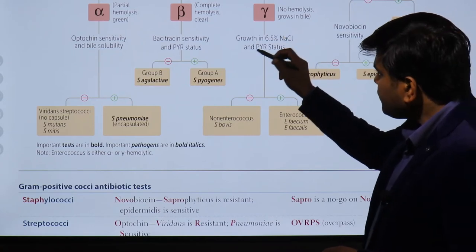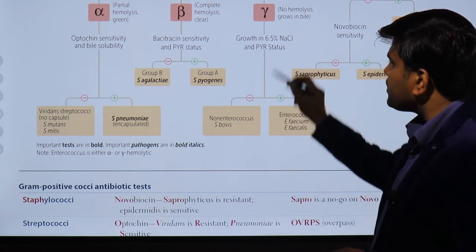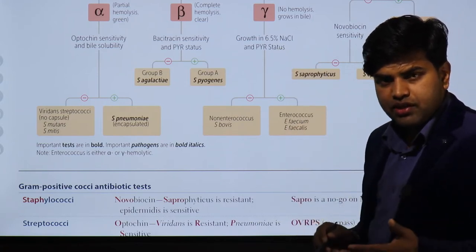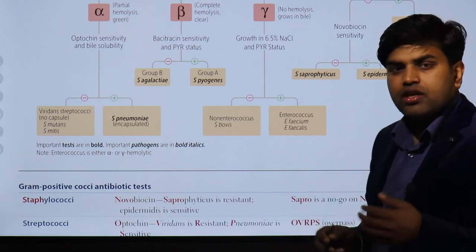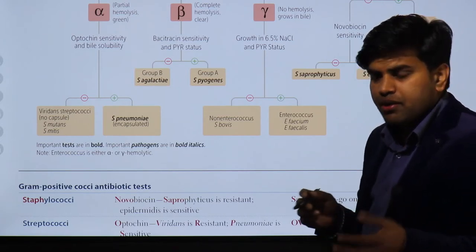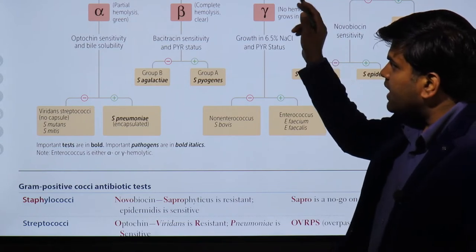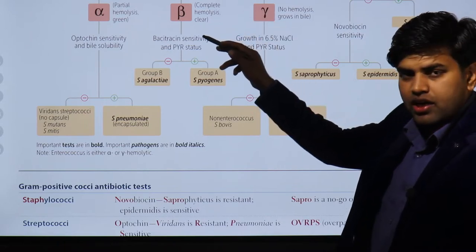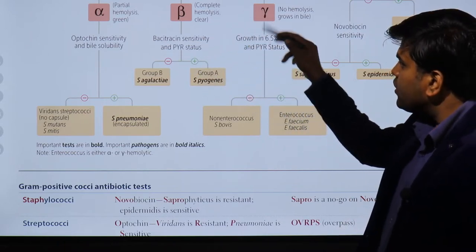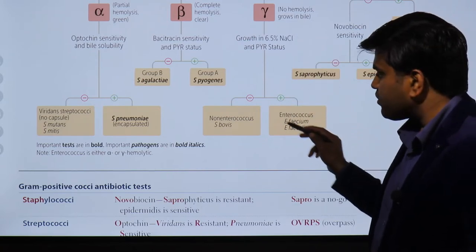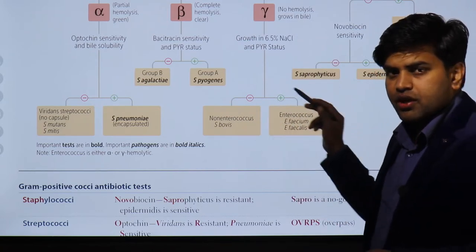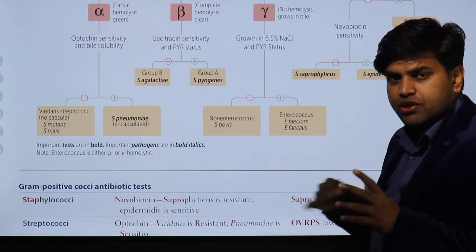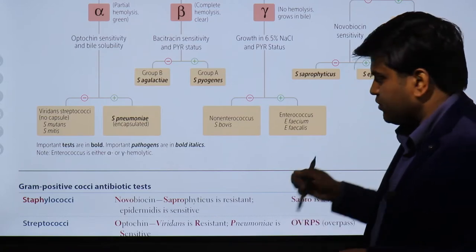How can they be differentiated? They can be differentiated by growth in 6.5% NaCl. On blood agar, we see alpha hemolytic, complete hemolysis (beta), and no hemolysis (gamma). The two no-hemolysis groups are enterococci and Streptococcus bovis. With this information, exam questions will give you a scenario and ask you to identify the organism based on the 6.5% NaCl growth pattern.